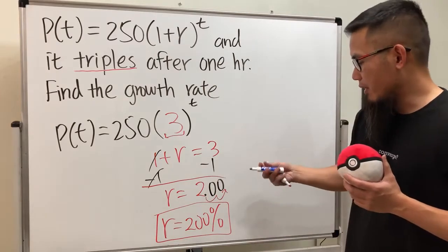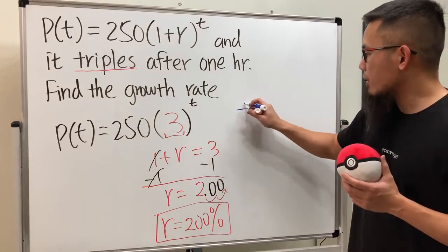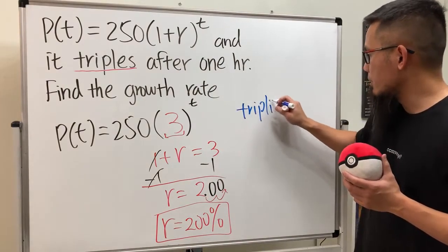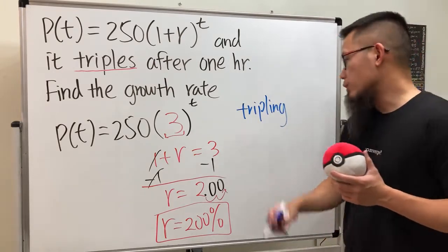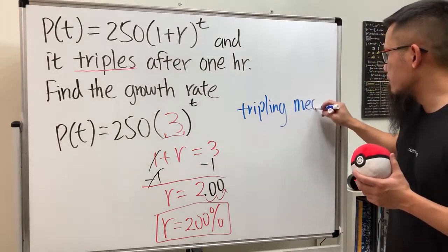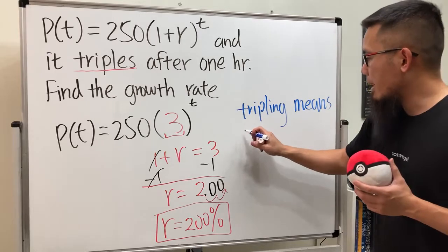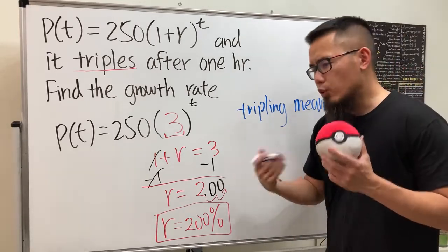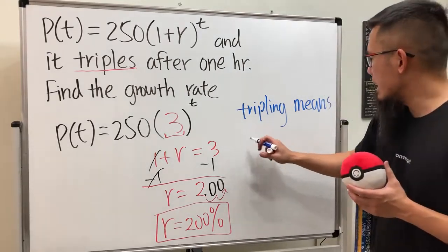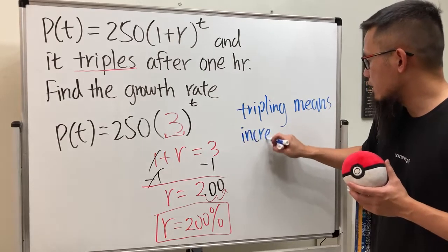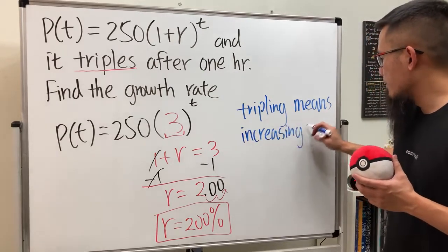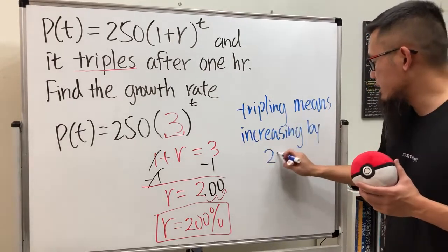Here's the usual thing you have to know: whenever we're talking about tripling, tripling means growing by 200. And when we say growing by 200, it means increasing by 200 percent.